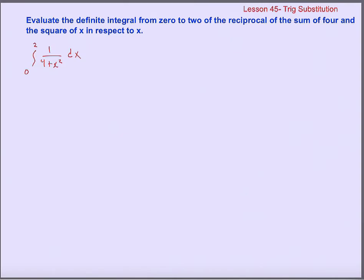Not having the square root doesn't make a big difference in the end. We're going to draw our triangle again and identify the hypotenuse first. The 4 and x squared are being added together to build the third side, which means 2 and x are the two legs. We want to put x on the opposite side and the constant 2 on the adjacent, which means the hypotenuse is the square root of 2 squared plus x squared.